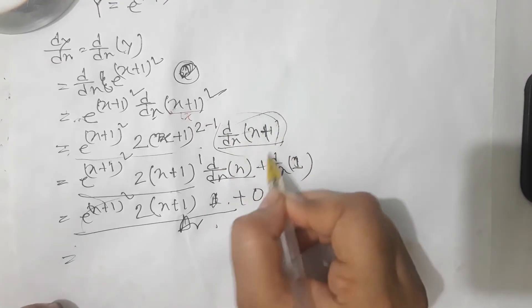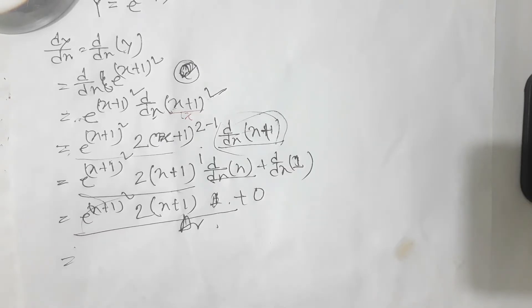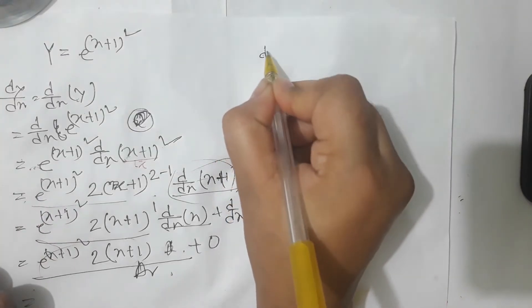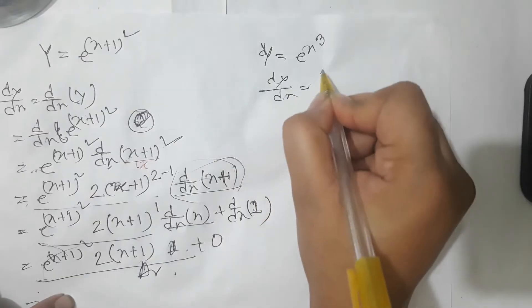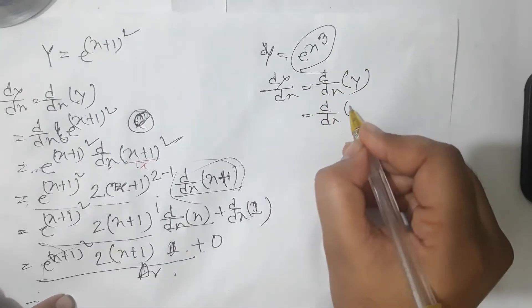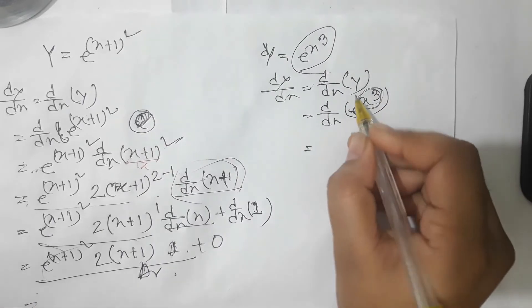I will see a new one. I will see again. I will see a new one. This is the new one. Y equals to e to the power x³. We get dy/dx equals to d/dx of Y. The rule is that we get the full manta x to the 2 to the 3, and x to the 3 is f of x.